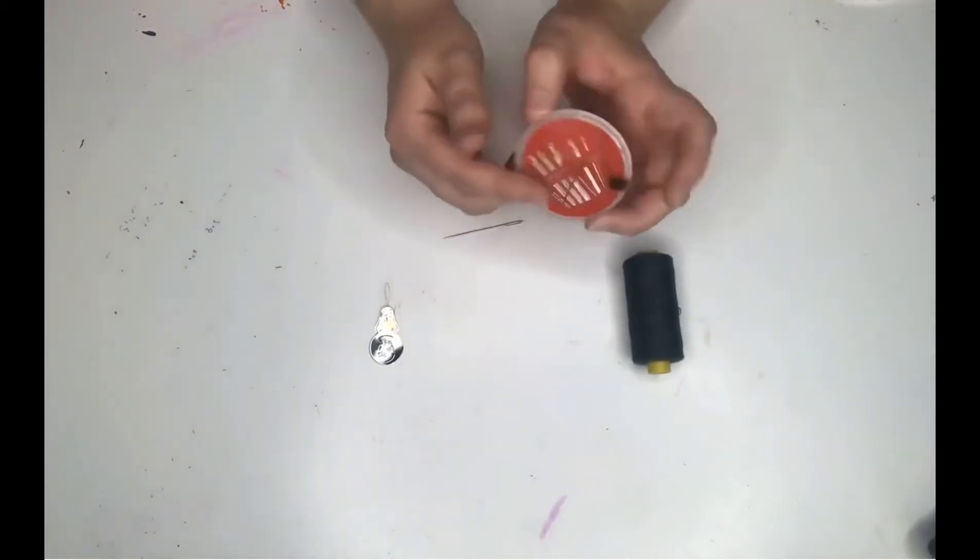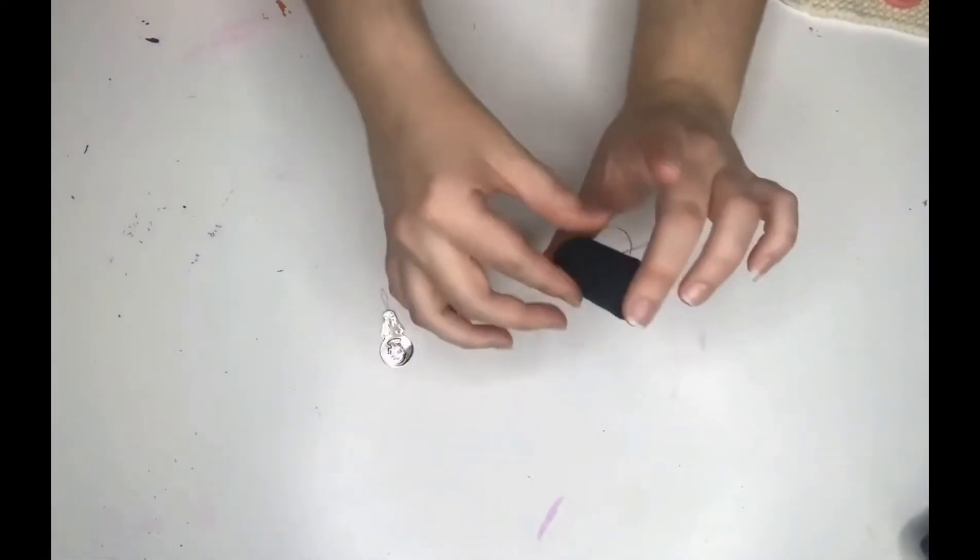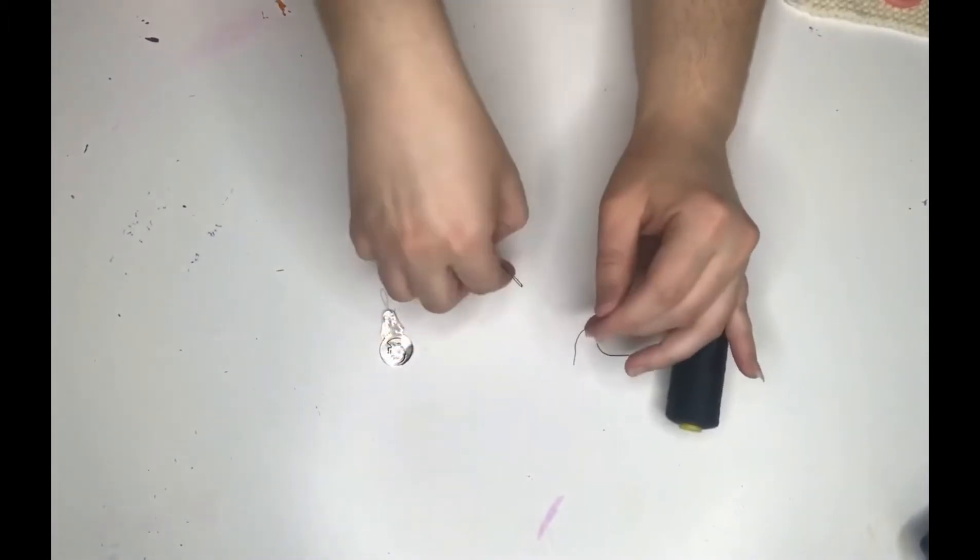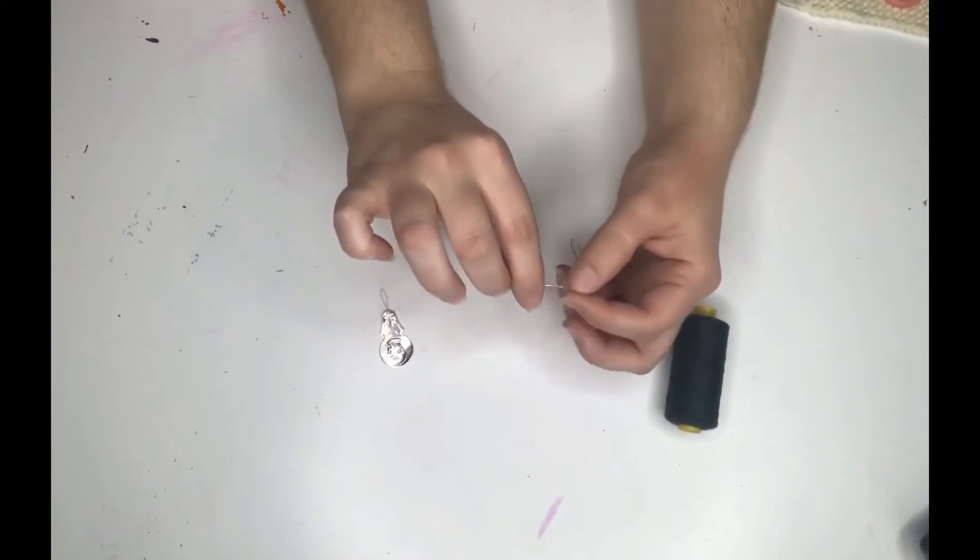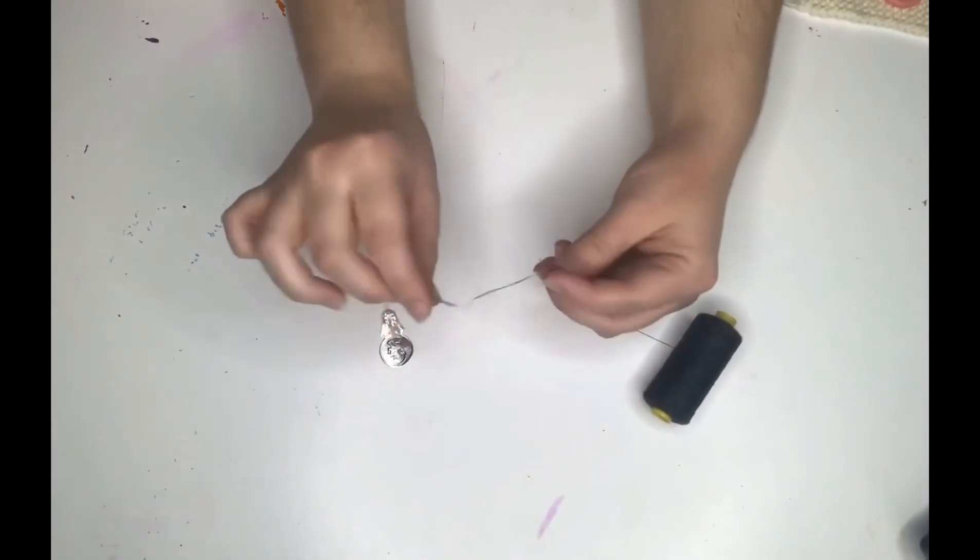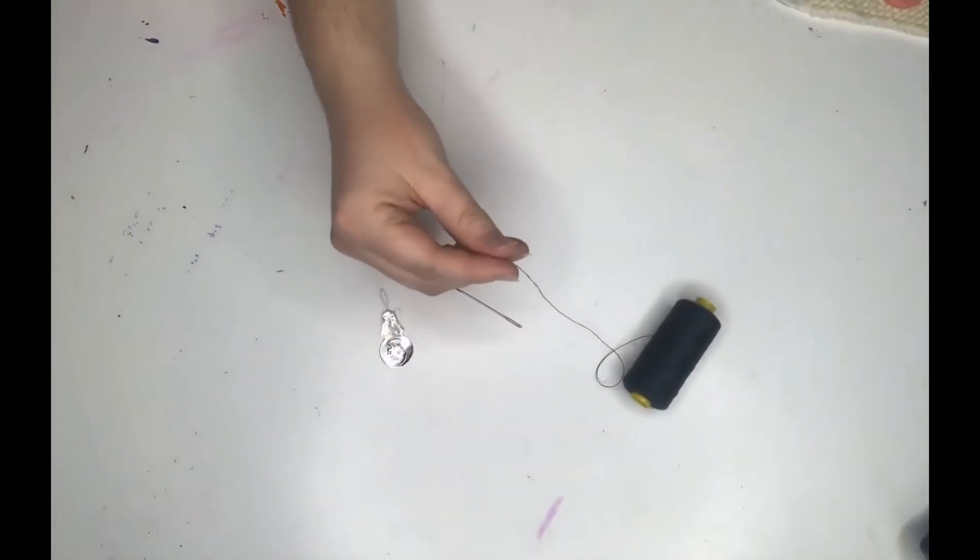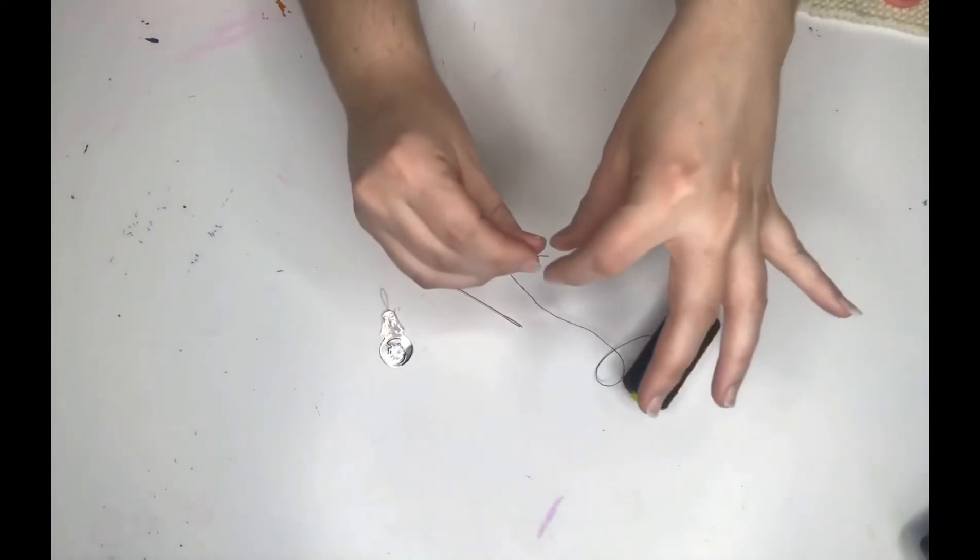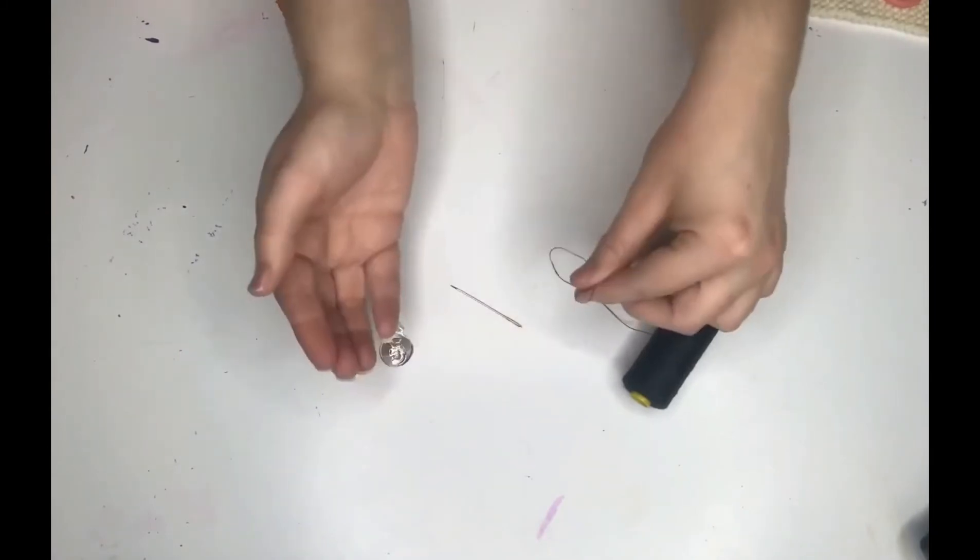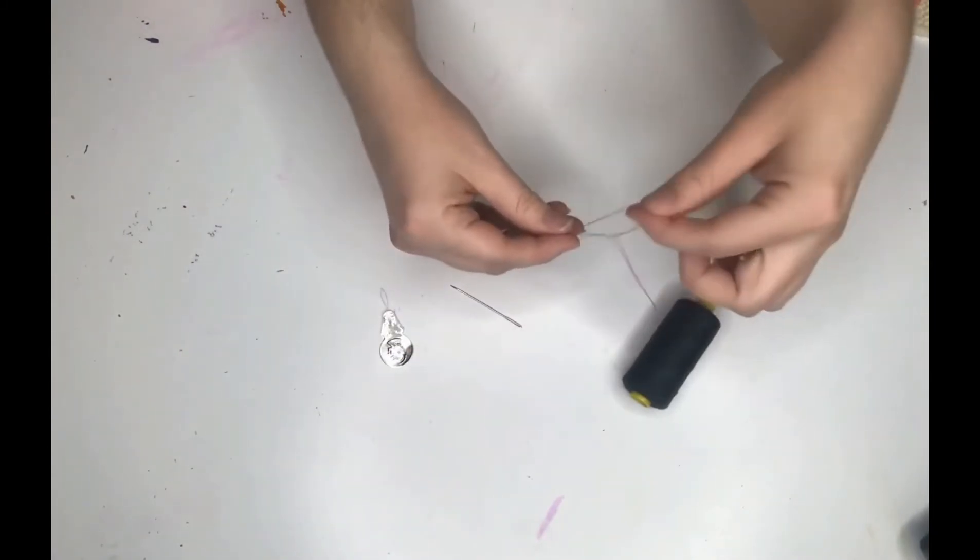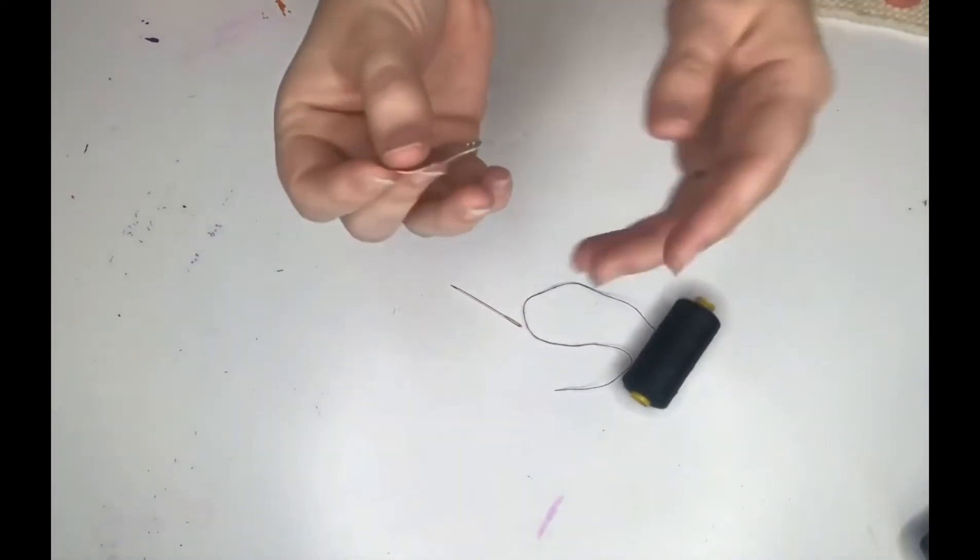Pull out some thread and you can try to thread your needle straight away. I've got quite a large one here so that's easy for me. If you're having trouble, you can wet the end, or if you get fluff coming off, cut it and try again. You can also fold it in half and twist it to stick it through that way. But the easiest way is to use your needle threader.